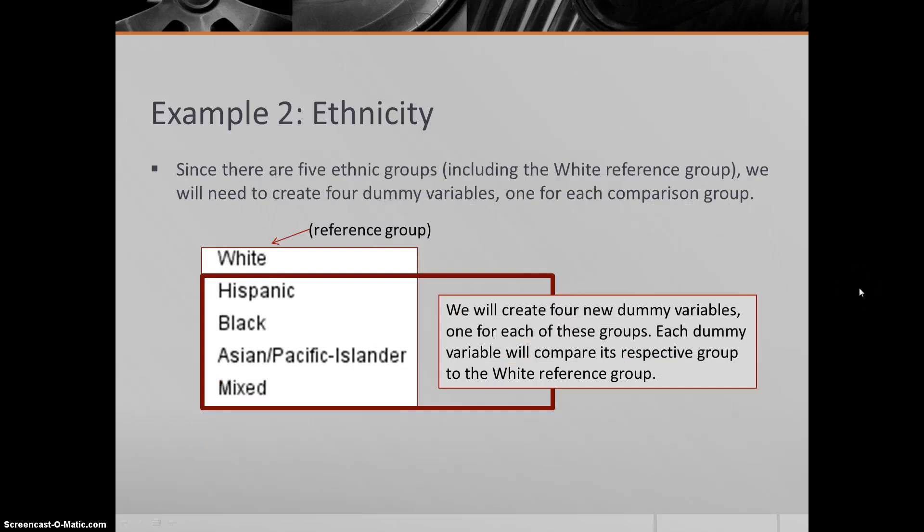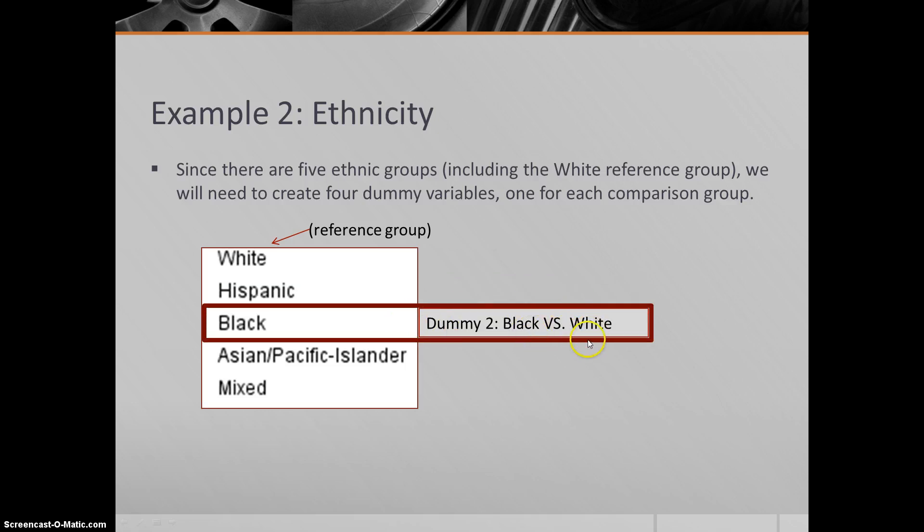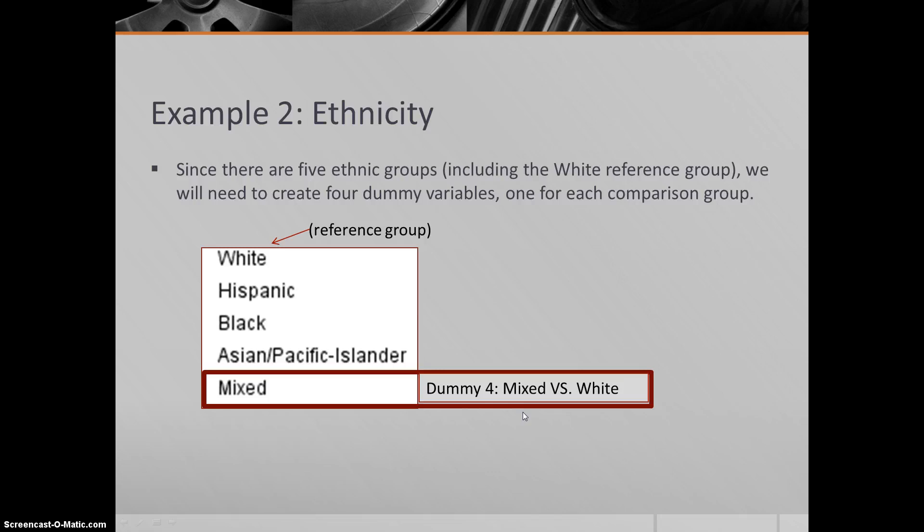In this case, we have 5 different ethnic groups. The white students are our reference group. We're always going to have 1 less dummy variable than we have total groups. That means we're going to have 4 dummy variables, 1 for each of these comparison groups. Each dummy variable will compare its respective group to the white reference group. So just with male and female, with the dichotomous variable, you're comparing the males to the female reference group. Here we would be comparing the Hispanic students with the white students, black students and white students, Asian students and white students, and mixed ethnicity students versus white students. So again, 4 new variables.